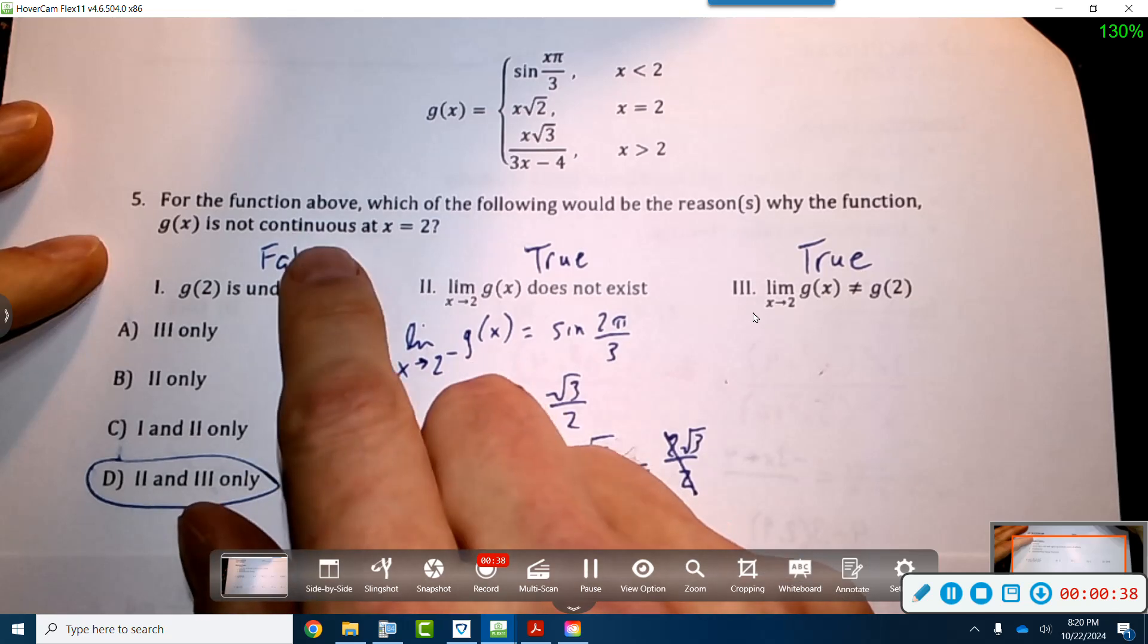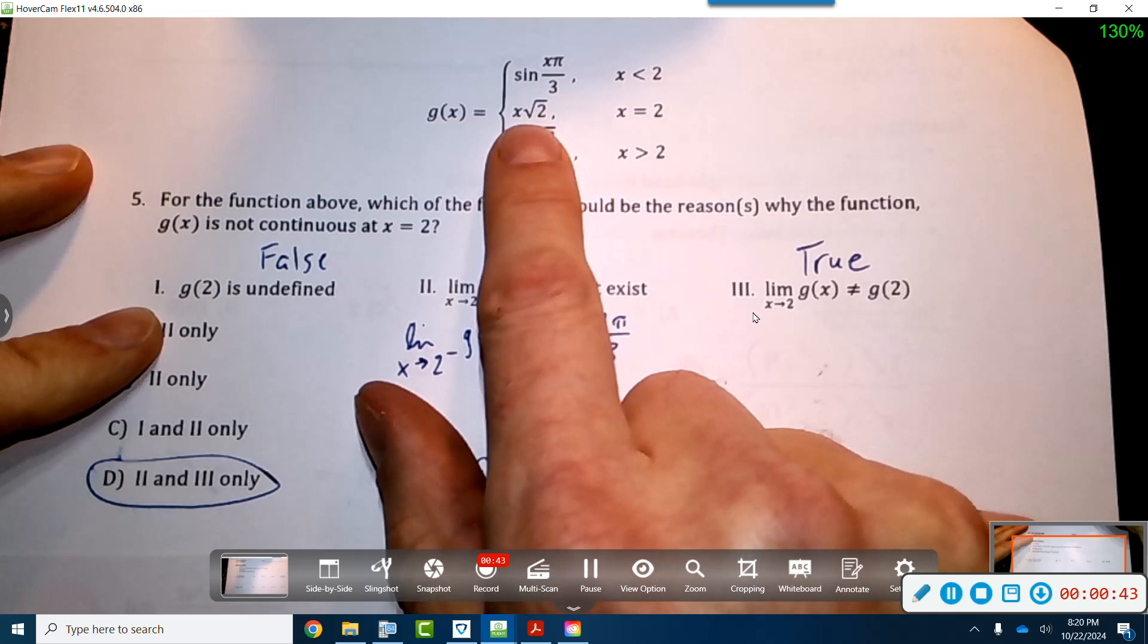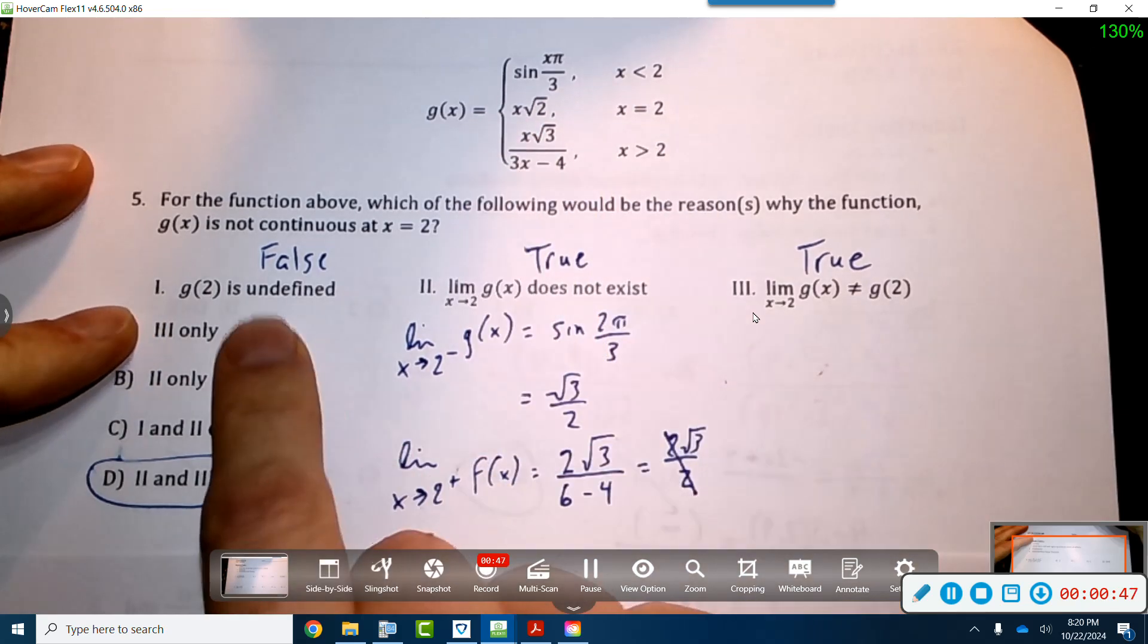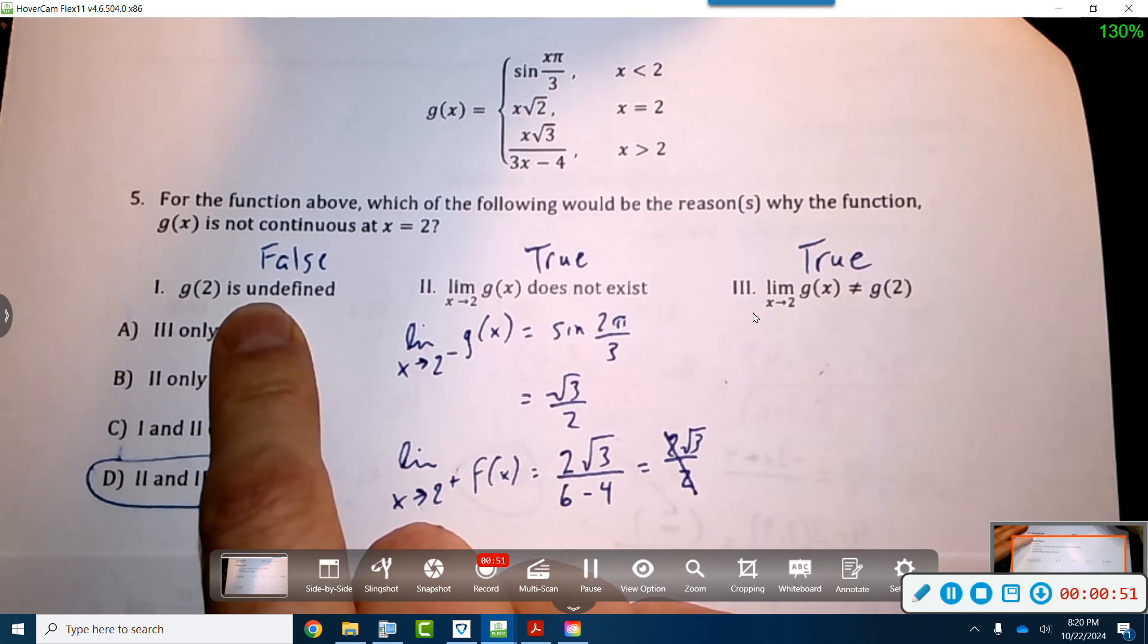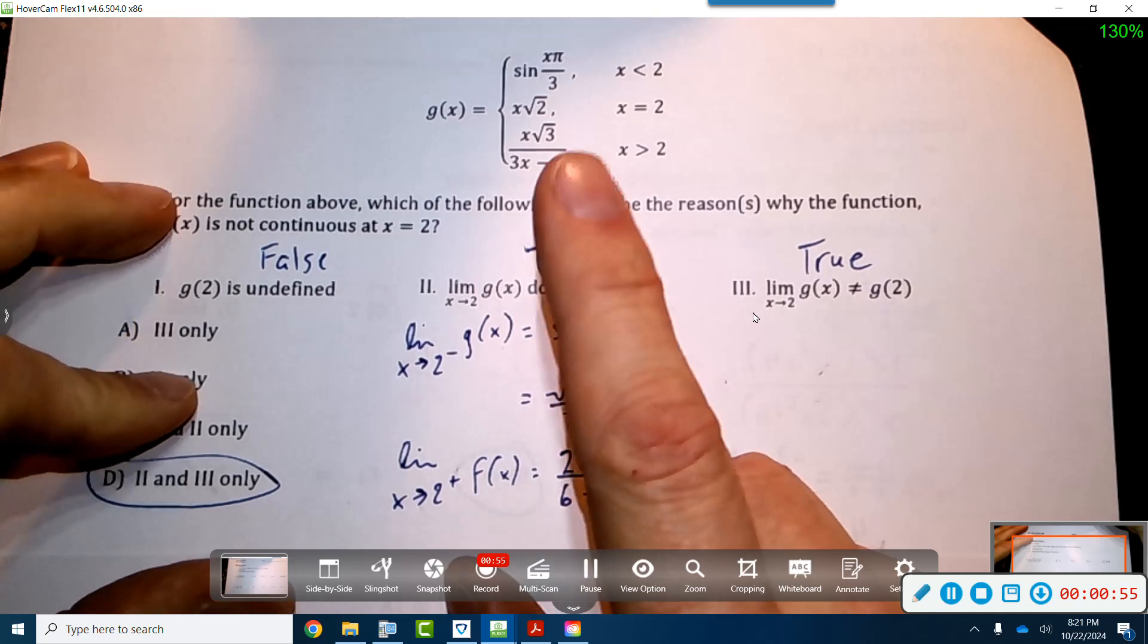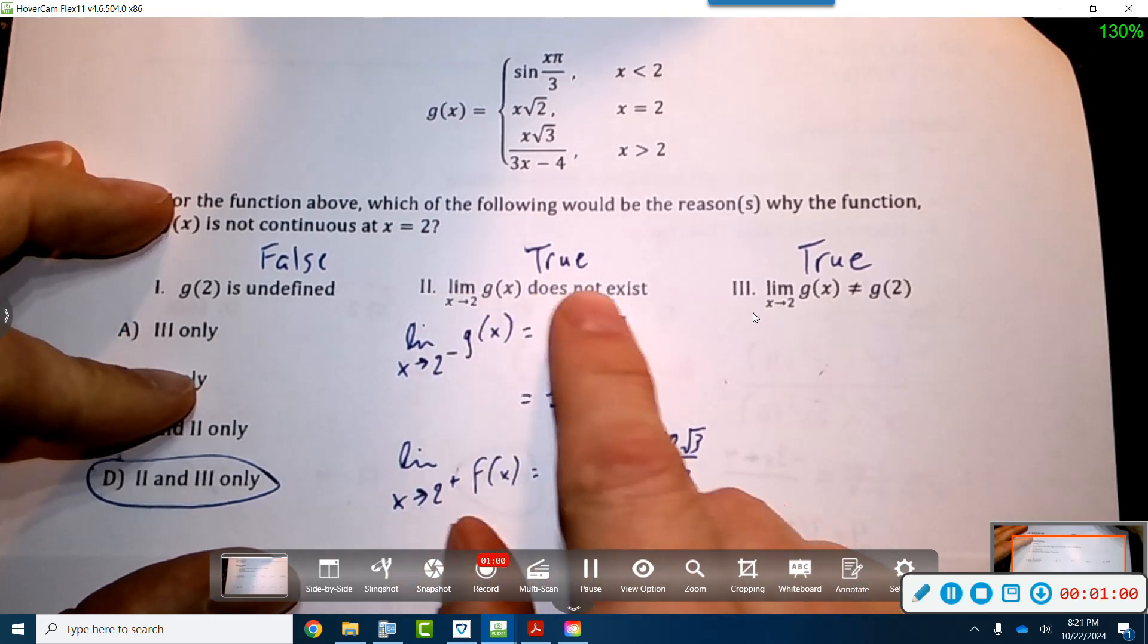Is it not continuous because g(2) is undefined? Well, the reason why this is false is because it actually is defined at 2. So when I plug in 2, g(2) actually equals 2 radical 2, so it's definitely defined, so that's false. But what about this being true?